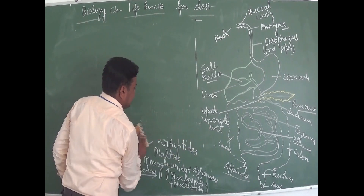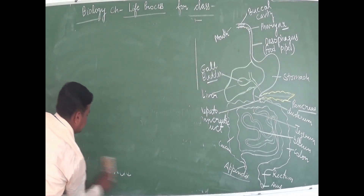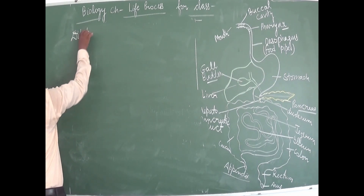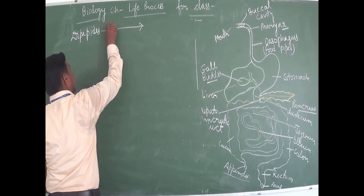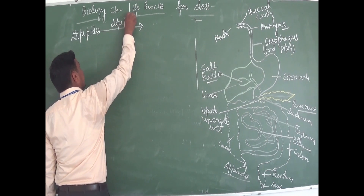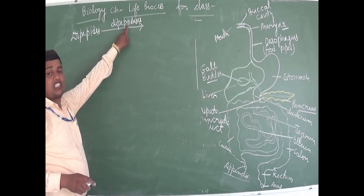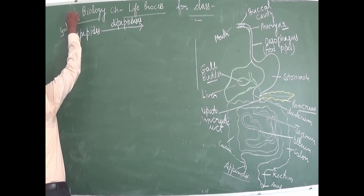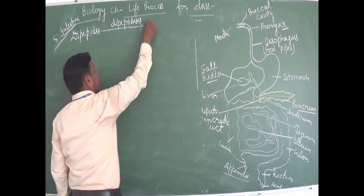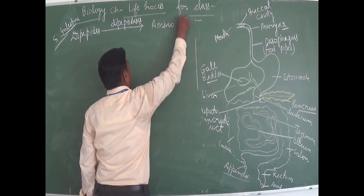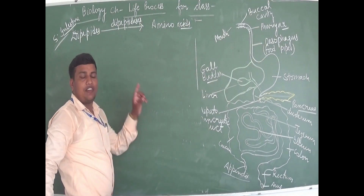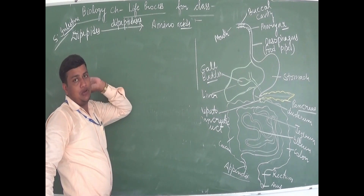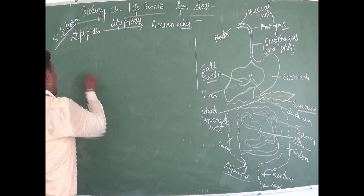Now let's see the breaking down of food in the small intestine by intestinal juice. Dipeptides are broken down by dipeptidases — an enzyme from the intestinal wall — into amino acids. Amino acids are the simplest form of protein. So digestion of protein is completed here. Maltose is broken down by maltase enzyme into glucose and fructose. Glucose and fructose are the simplest form of carbohydrates.